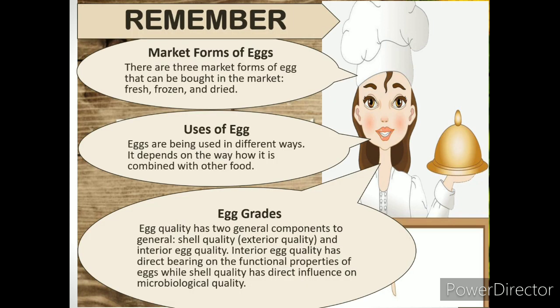Alright, let us remember. Market forms of eggs are: fresh, frozen, and dry. Uses of eggs vary depending on the way they are combined with other food. Egg grades: egg quality has two general components — shell quality (exterior quality) and interior egg quality. Interior egg quality has a direct bearing on the functional properties of the eggs, while shell quality has a direct influence on microbiological quality.